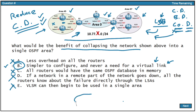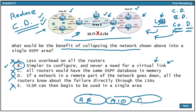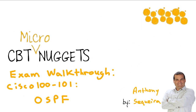Let me draw out that virtual link situation. Let's say we have area zero, and then we have area 10, and then strung out over here, an area 11 — this is when we need a virtual link. We take the two routers and connect them with a virtual link so that area 11 appears to have direct connectivity with area zero. Obviously, we have no need for this design band-aid if all of the devices are in the exact same area.